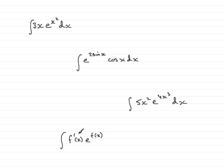That differential is denoted by f dash of x. You'll notice they've all got this exponential function in: e to the x squared, e to the 2 sine x, e to the 4x cubed.